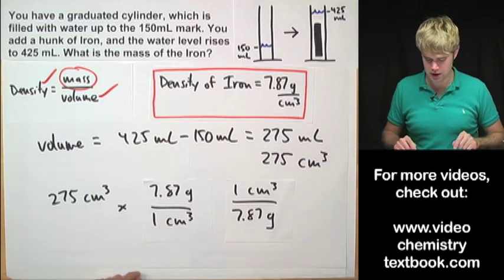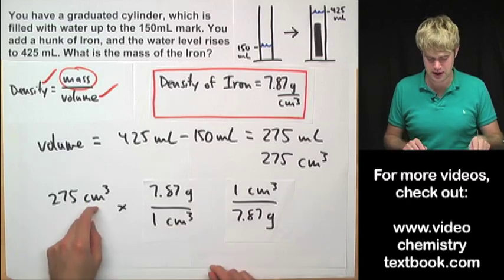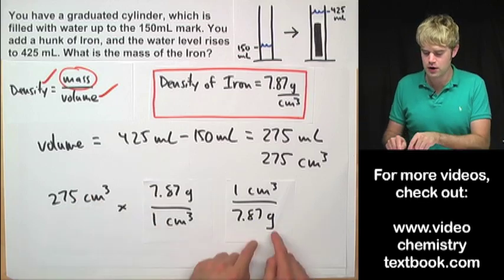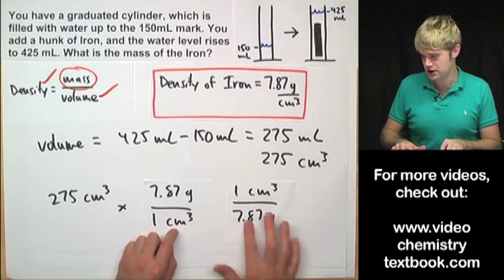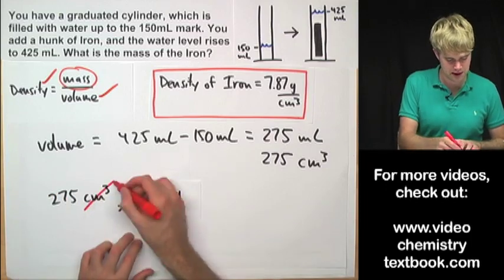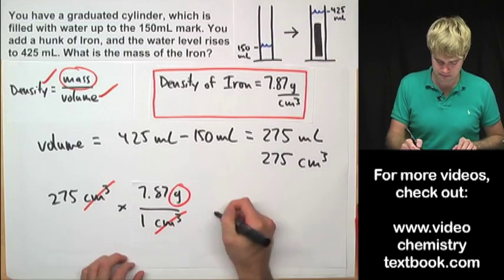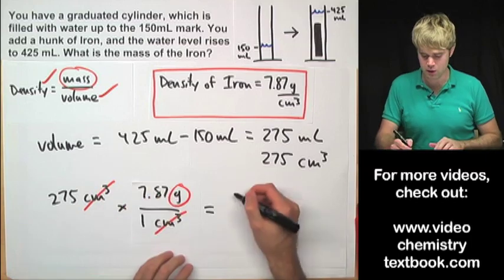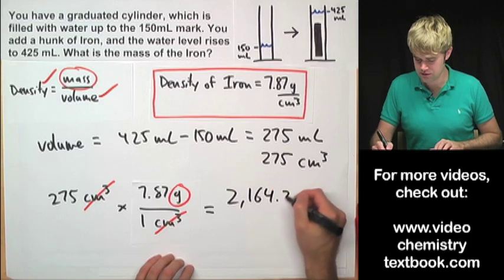Which of these do we want to use? This one or this one? Well, we're hoping to cancel out cubic centimeters and be left with grams. So that means that since cubic centimeters is on the top here, we're going to want to choose the version of the density conversion factor that gives us centimeters cubed on the bottom. Here it is right here, we're going to use this one. So now when I multiply through, centimeters cubed on the top, centimeters cubed on the bottom so they cancel out and I'm left with grams. I'm going to do 275 times 7.87 divided by 1 and the answer is going to be 2,164.25.